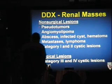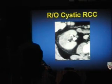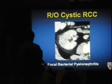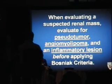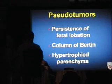Here's a patient that might come across your desk as rule-out cystic renal cell carcinoma. If you go down the path of applying Bosniak features and say there are some septations — this must be a category 3 and a surgical lesion — you'd be making a mistake, because this is focal bacterial nephritis. The clue is the stranding in the perinephric fat. When evaluating a suspected renal mass, always make sure you're not dealing with a pseudotumor, angiomyolipoma, or inflammatory lesion before applying Bosniak criteria.